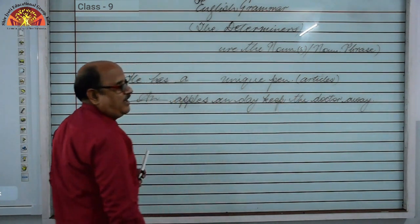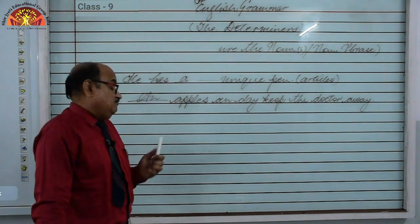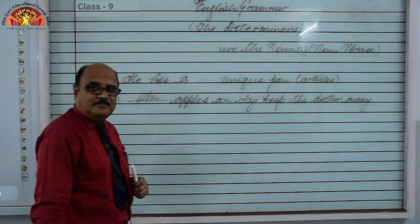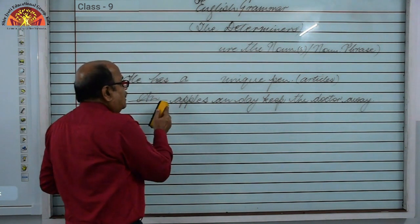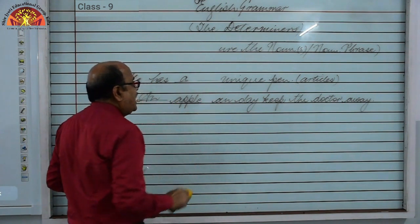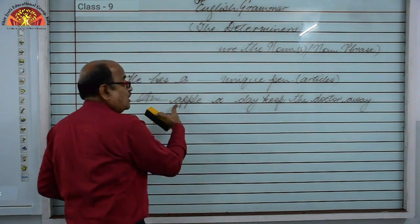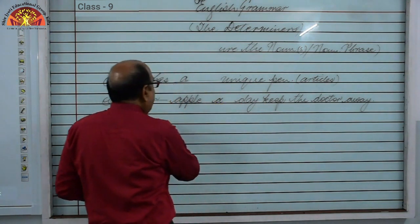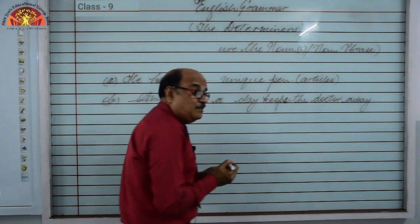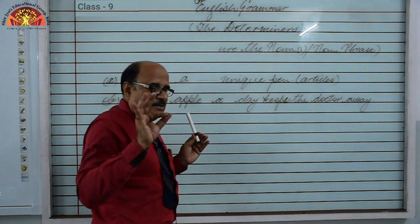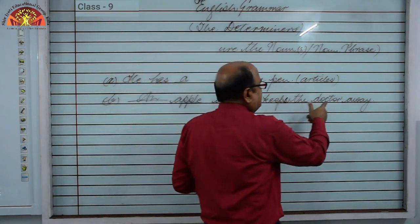'___ apple ___ day keeps the doctor away' — it looks odd as written. Find the errors and make corrections. 'An' is used for singular countable nouns with a vowel sound, so 'an apple.' 'Day' begins with a consonant sound, so 'a day.' The sentence uses a singular noun, so the verb becomes 'keeps' in present indefinite tense — 'S' or 'ES' is added when the subject is singular. Corrected: 'An apple a day keeps the doctor away.'